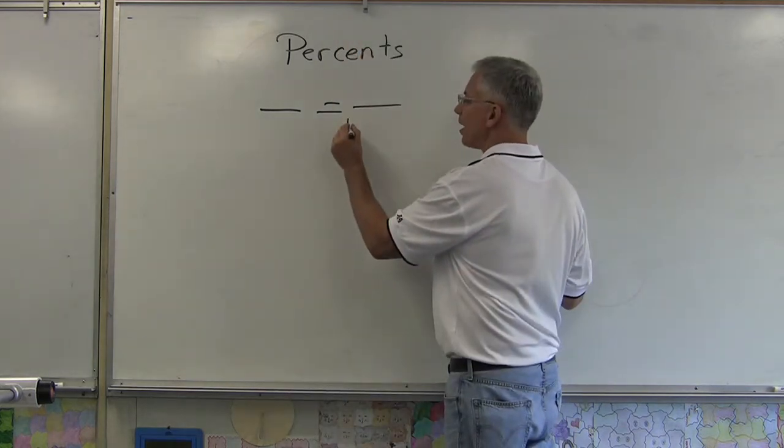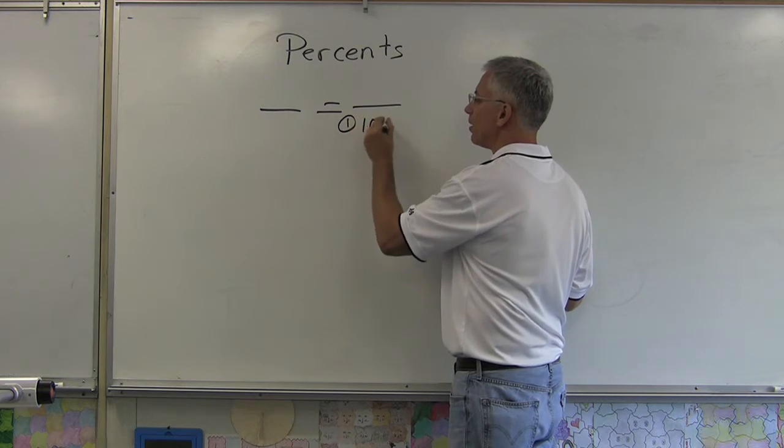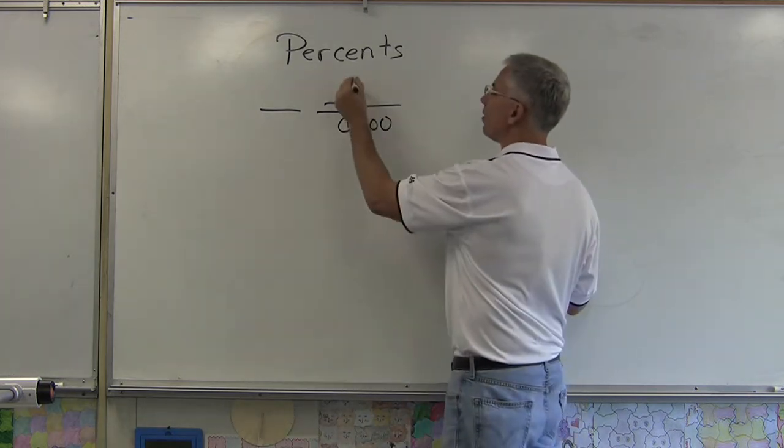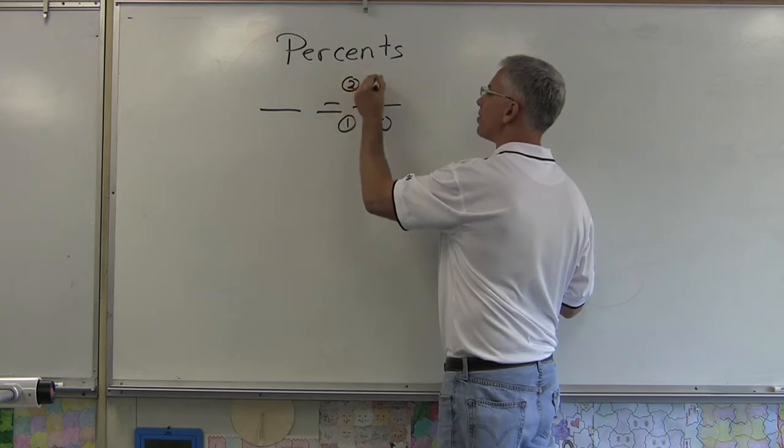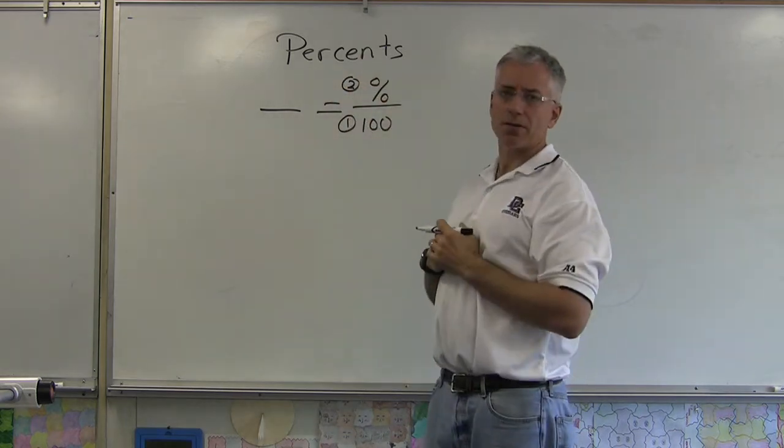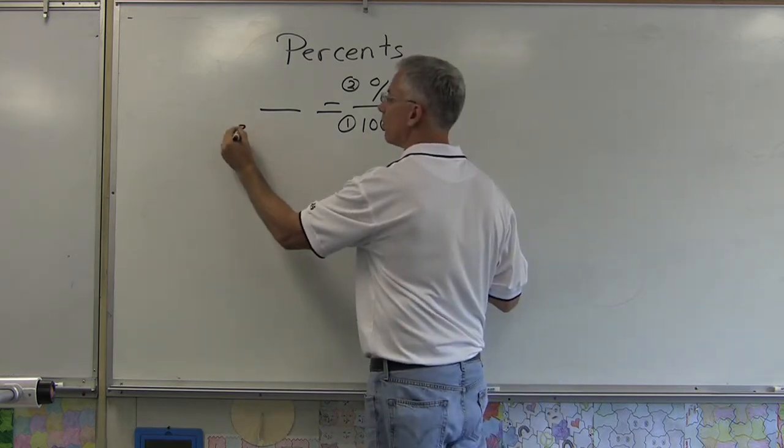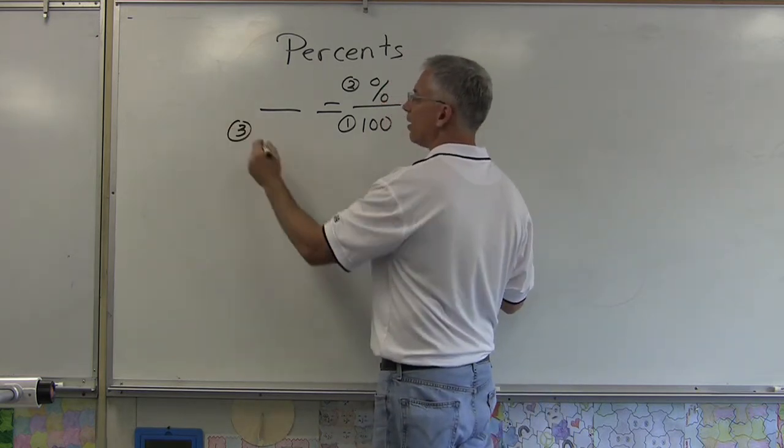The first thing I do is put the number 100 right there. The second thing I do is look for the percent—whatever percent is involved in the problem, that's what I put right there. Then the third thing I do is look for the word 'of.'